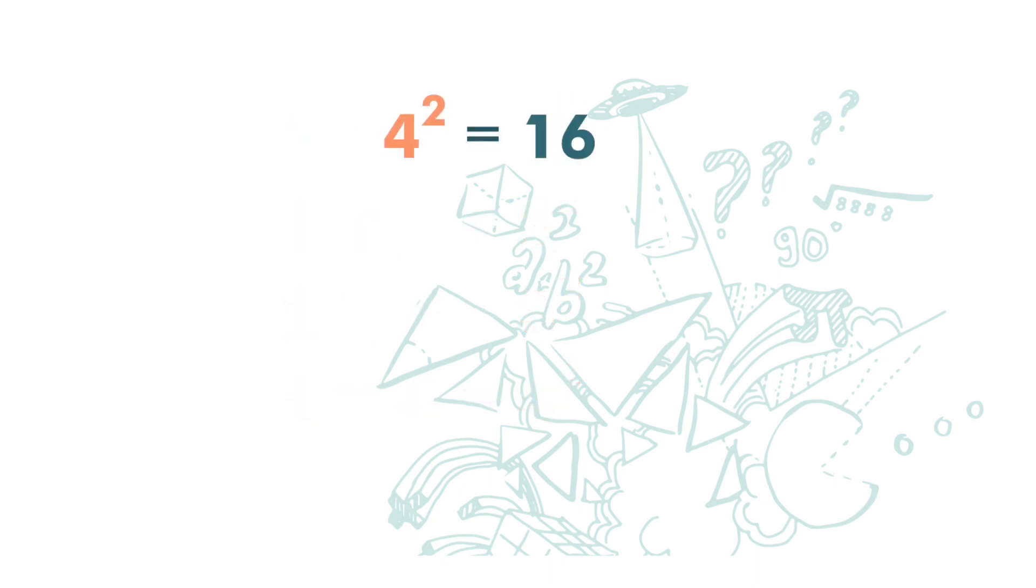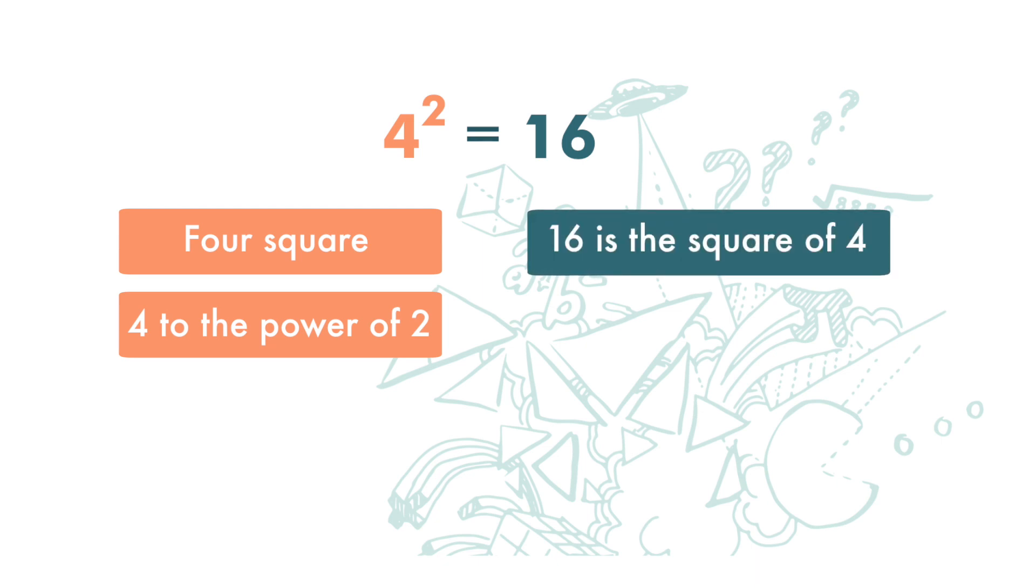The one on the left hand side is read as 4 square or 4 to the power of 2. The one on the right hand side is read as 16 is the square of 4. Next we are going to look at the square of negative numbers.